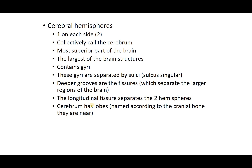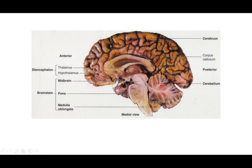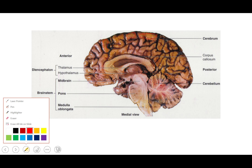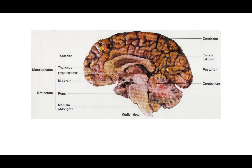Looking at the gyri and sulcus: the thicker raised parts are the gyri, and the dark indented parts are the sulcus — the folds that separate the gyri.